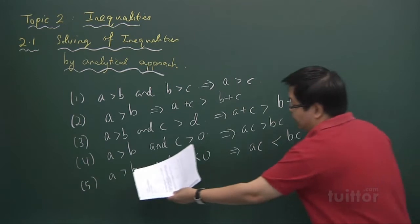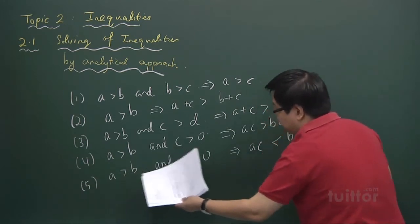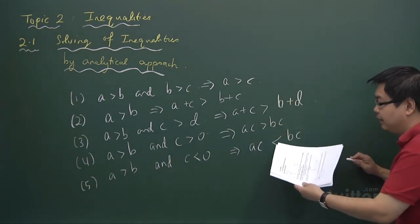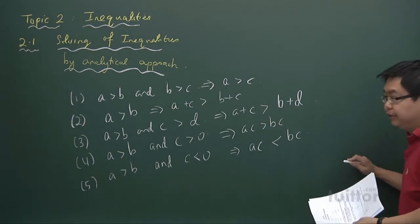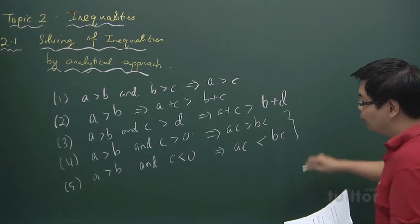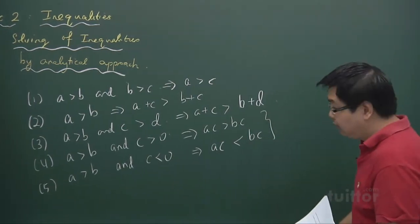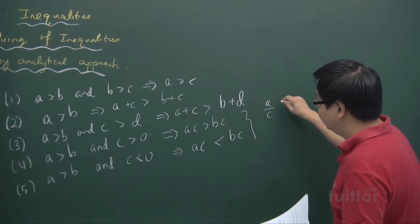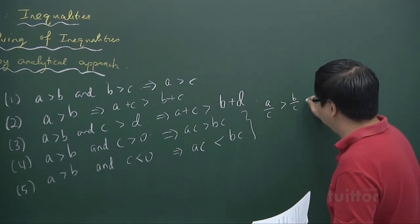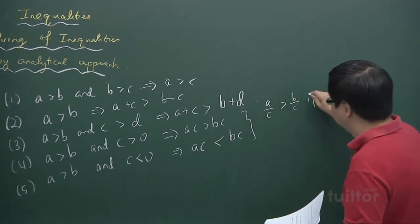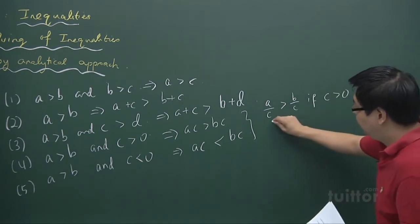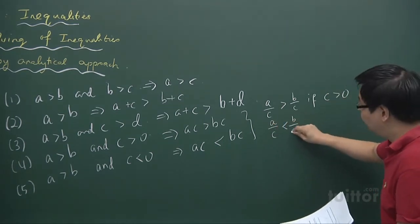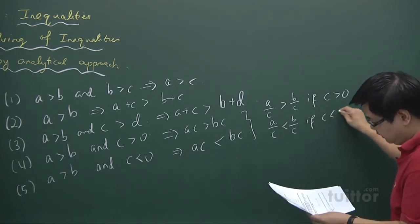So from A greater than B, if you multiply both sides by C where C is a negative number, the inequality sign will change. This is also true for division: A divided by C will be greater than B divided by C if C is positive, and A divided by C is less than B divided by C if C is negative.